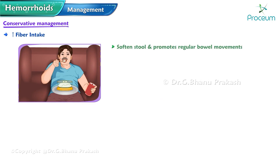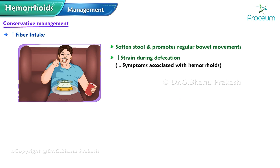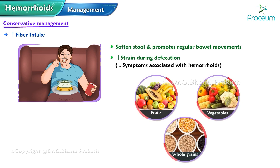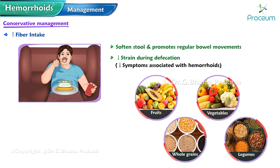Conservative therapies are the initial treatment for symptomatic hemorrhoids. Increased fiber intake — consuming a diet rich in fruits, vegetables, whole grains, and legumes — helps soften the stool and promotes regular bowel movements, reducing strain during defecation and alleviating hemorrhoid symptoms.